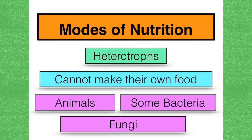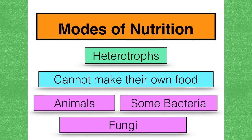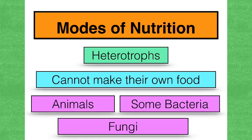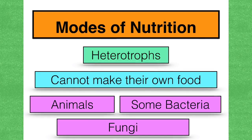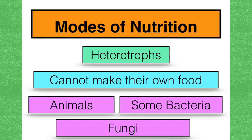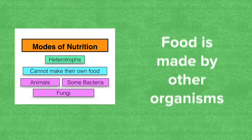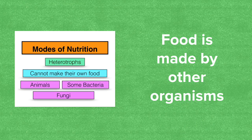If organisms cannot make their own food, then they're heterotrophs. Animals, some bacteria, and fungi are examples of heterotrophs. These organisms have to take in food made by other organisms.